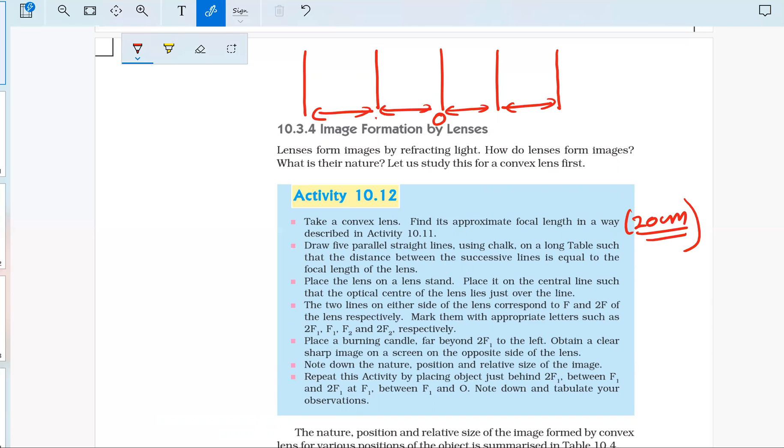Now this is F1, this is 2F1, this is F2, and this is 2F2. We'll place the lens on a stand here so that the optical center of the lens will lie at this point.